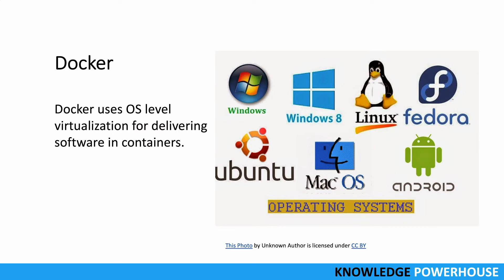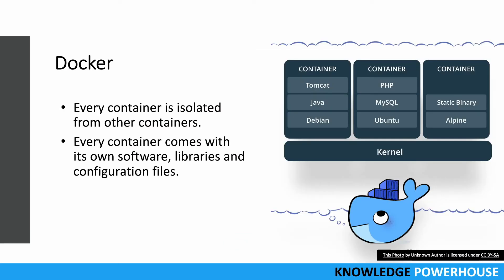Docker uses OS-level virtualization for delivering software in containers. Whether you have Windows, Linux, macOS, or different operating systems, Docker uses that virtualization internally. You just provide your binaries, a container image is created, and it can be deployed on that specific operating system. There is no need for a hypervisor or a separate guest operating system, making life much easier.